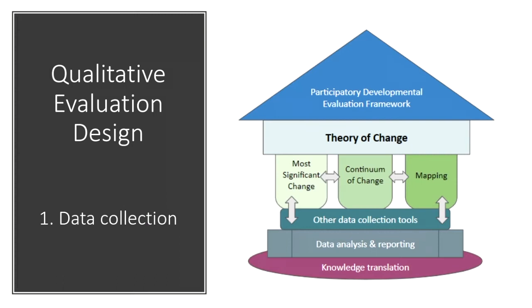Our three main sources of data collection included one-on-one interviews with the CHN coordinators, document reviews, and focus groups. To a lesser extent, and if applicable, local health area data and other administrative data were used, and when feasible — which was very much the minority — local quantitative data specific to CHN initiatives.